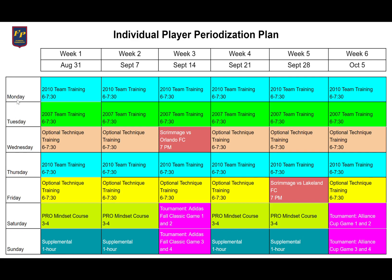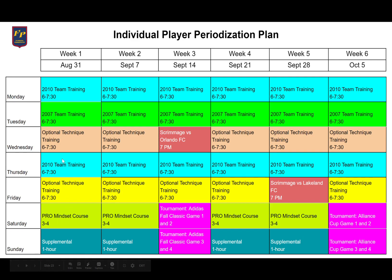For week one, August 31, this player is in the 2010 team training from 6 to 7:30. On Tuesday they're training with the 07s, being pushed at a higher level. Wednesday is optional technical training, Thursday back with the 2010s, Friday another optional technique session, Saturday the pro mindset course, and Sunday a supplemental one-hour training on their own with their parent.